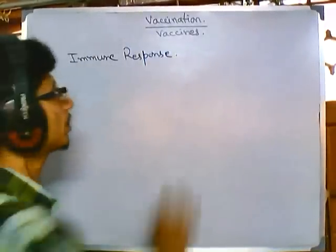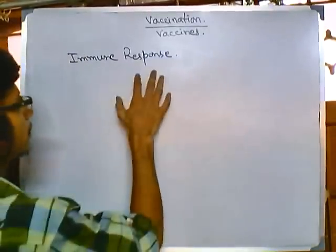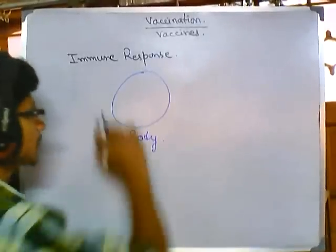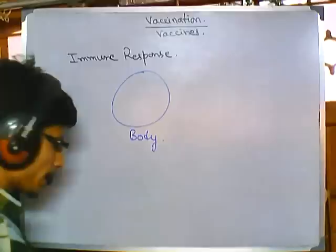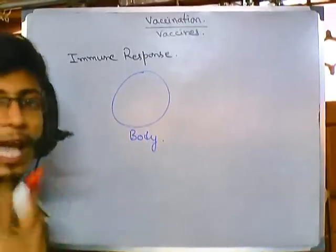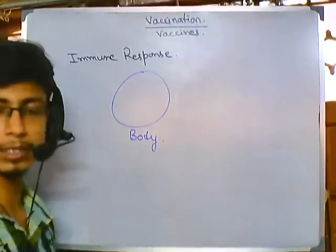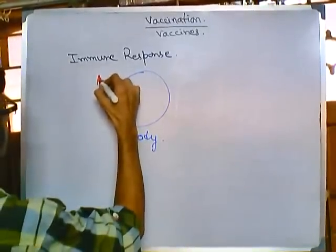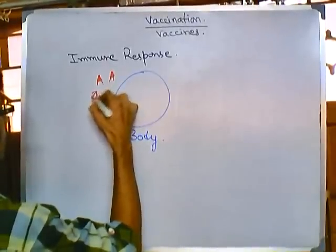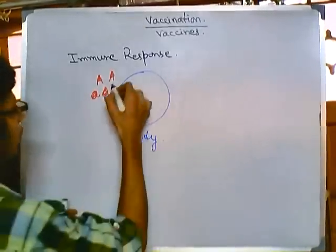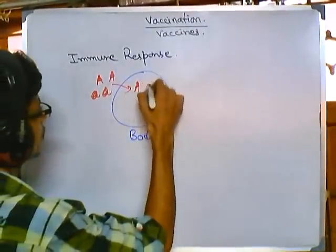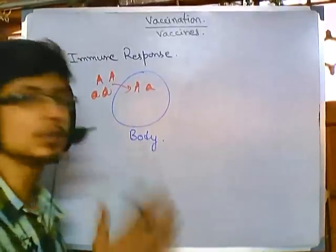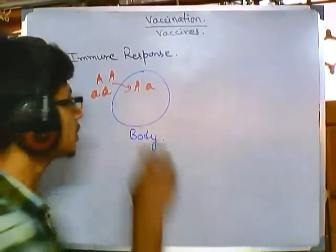We first need to know what is immune response, because this immune response is used as a mechanism for the vaccination process. Suppose this is our healthy body — this is the barrier, this is the outside, this is the inside. Any kind of molecule, it could be an allergen or an antigen — those are proteins, or conjugated proteins with sugars and other factors — suppose these are the antigens entering our body. After entering, they trigger some of the cells of the immune system.